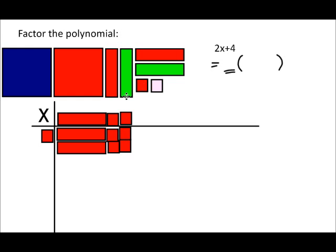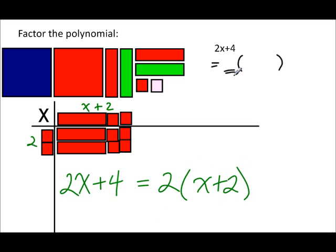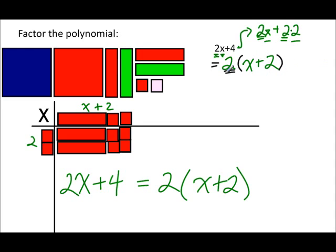Once rearranged, here we have x plus 2 along one side and 2 along the other. That tells us that 2x plus 4 is actually equal to 2 times (x plus 2). Looking at just the algebra: there's a factor of 2 in 2x, and 4 is 2 times 2, so there is a common factor of 2. Taking the 2 out leaves x and 2, giving us 2 times (x plus 2).